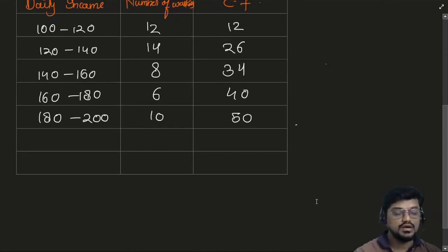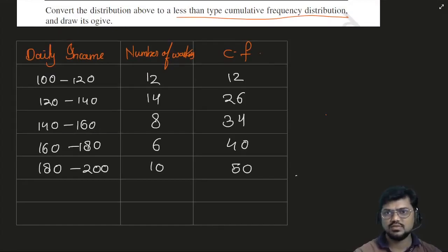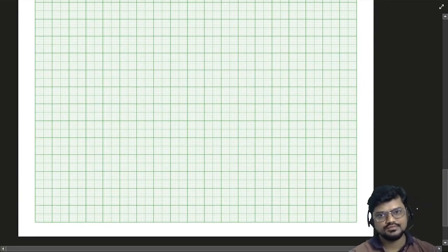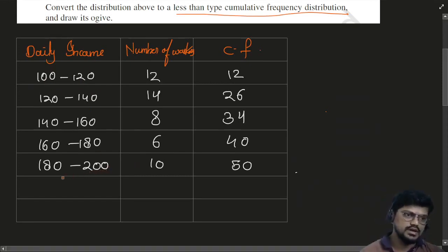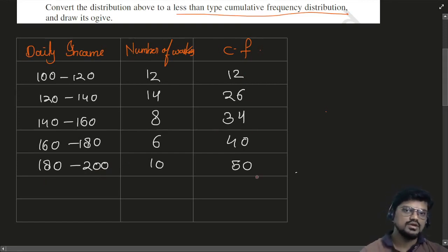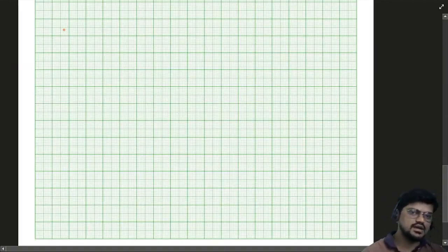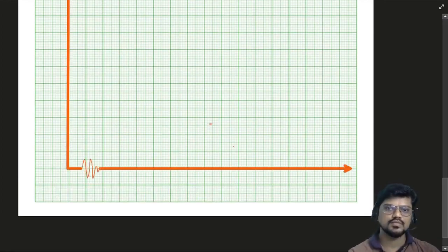Now we will use a graph to make the cumulative frequency graph. The daily income on the x-axis runs from 100 to 200, and the cumulative frequency will always be drawn on the y-axis. Since the data doesn't start from 0, we draw a broken line at the origin.